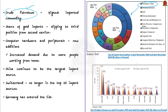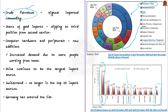The share of gold imports reduced in the same period to 5.6%, making gold the third topmost commodity in merchandised imports as of April-November 2020. Computer hardware and peripherals was added to the top 10 import commodities, driven by increased demand due to more people working from home. China continues to be the largest import source for India. Switzerland is no longer among the top 10 import sources; Germany now accounts for 3.7% share of total imports.